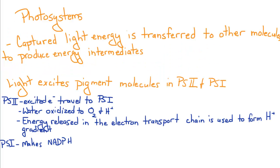The whole purpose of the photosystems is to capture light energy, and then that light energy is transferred to other molecules to produce energy intermediates. Basically, the light is going to excite pigment molecules in both photosystems I and II.